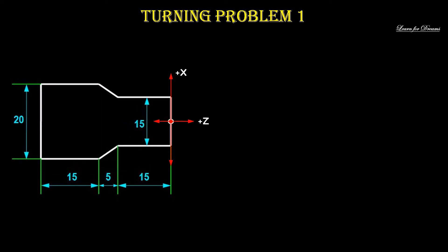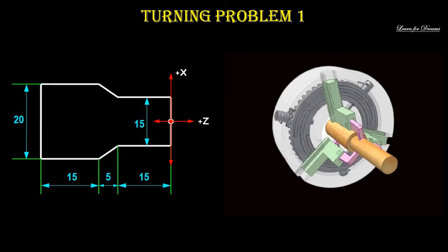Turning mein sirf do axis use hote hai: the horizontal axis is Z axis and the vertical axis is X axis. We always remember that the horizontal distances are Z and the vertical distances are X.